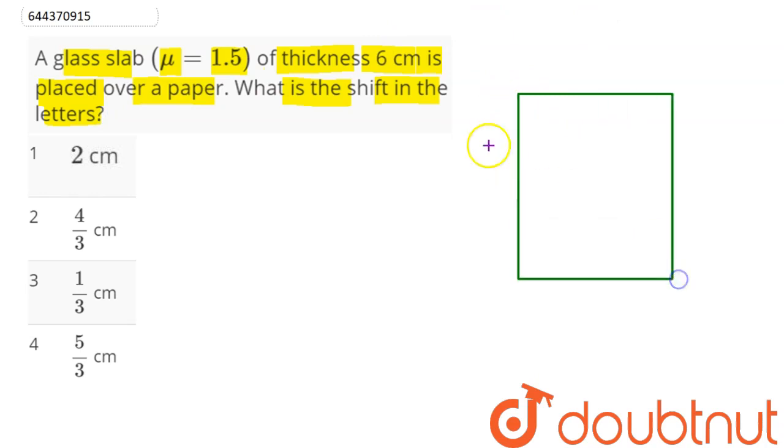So we have a glass slab whose thickness is given as 6 centimeters. So this is our glass slab of thickness 6 centimeters. Now refractive index of this slab is given as 1.5, so here we need to find the shift in the letter.